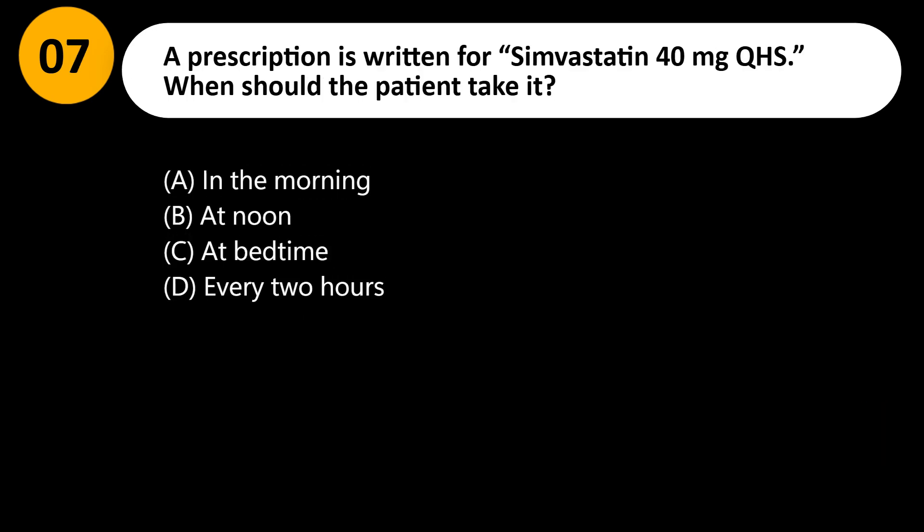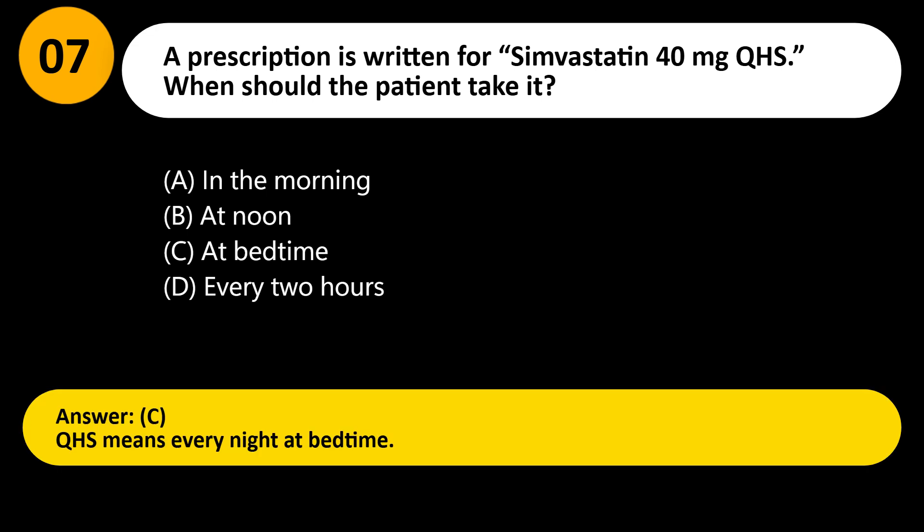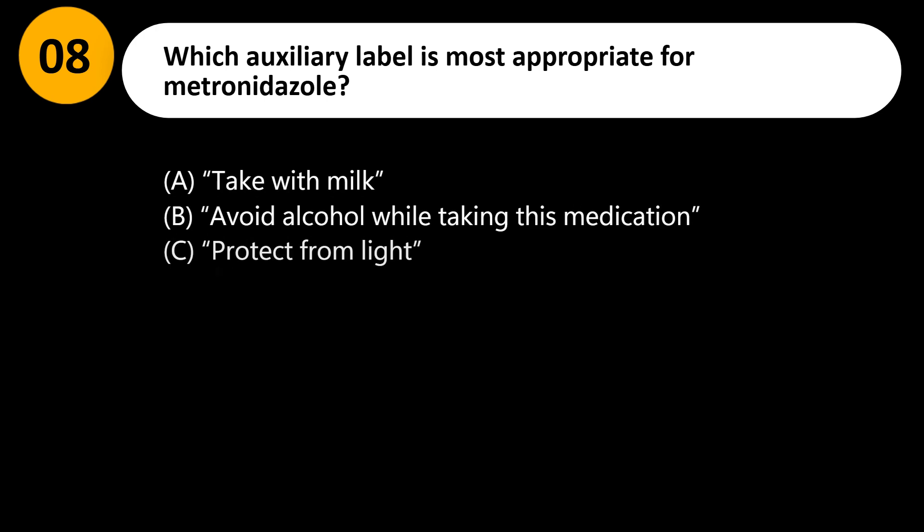A prescription is written for simvastatin 40 mg QHS. When should the patient take it? A) In the morning, B) At noon, C) At bedtime, D) Every two hours. Answer: C. QHS means every night at bedtime.